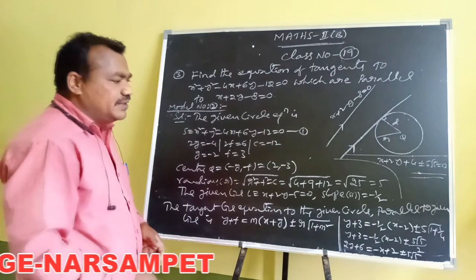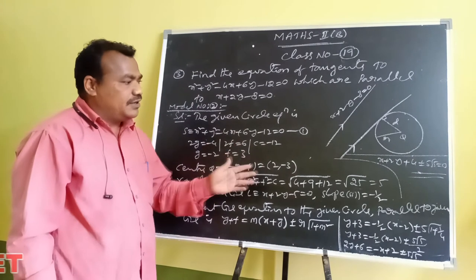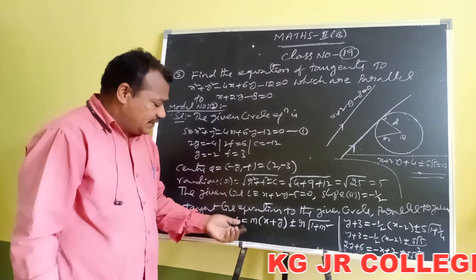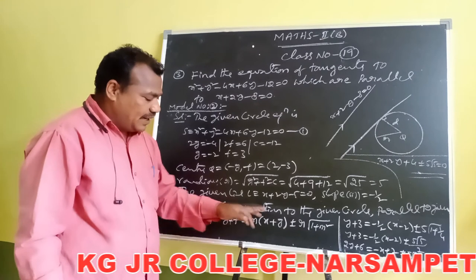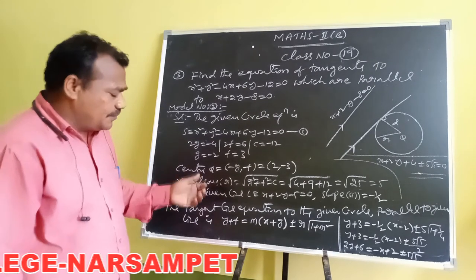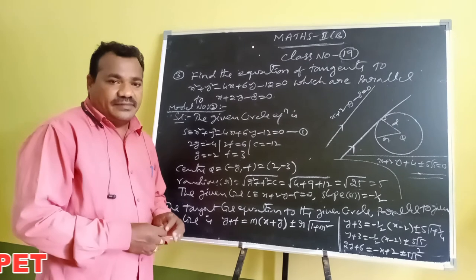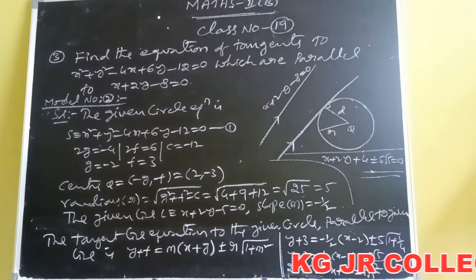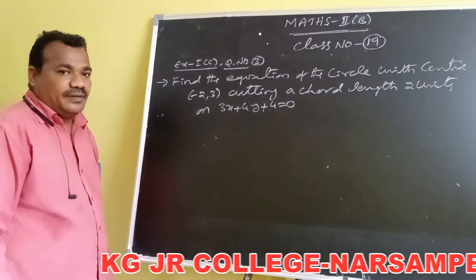These are the required tangent equations to the circle which are parallel to the given line. This is another method. Whenever we know the slope, the center coordinates, and the radius of the circle, we apply this formula. Or otherwise we can use the tangent condition.